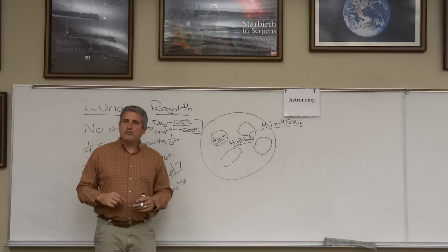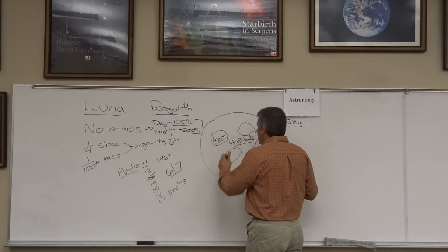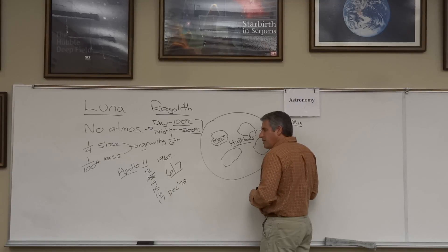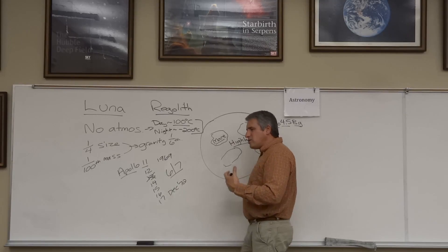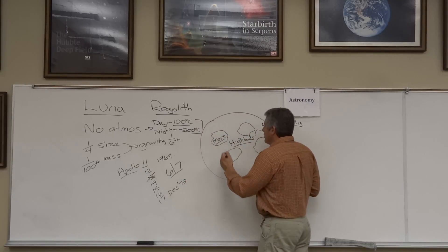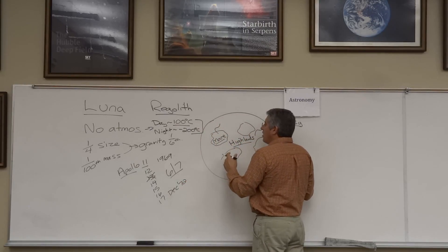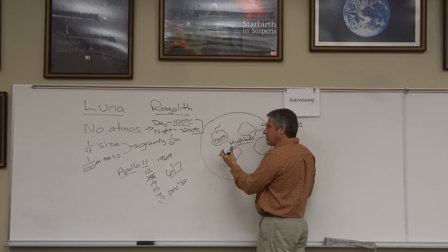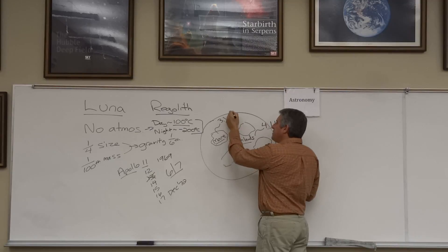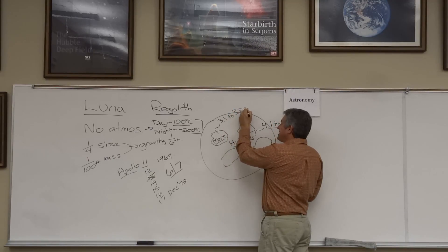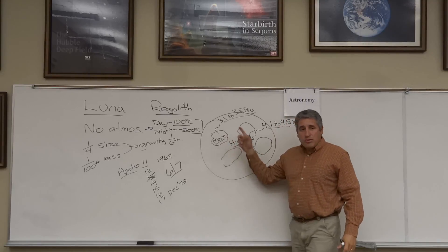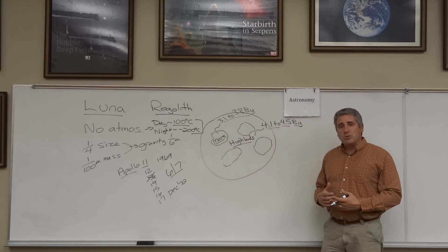The same is not true for the mare. Interestingly, the mare have very few craters. Given that there's no wind and no water on the moon, what could be re-smoothing the surface? The mare, it turns out, are ancient impact craters. They are only 3.1 to 3.8 billion years old — still old by Earth standards, but on the moon, that's pretty young.